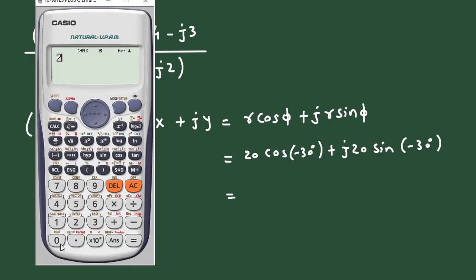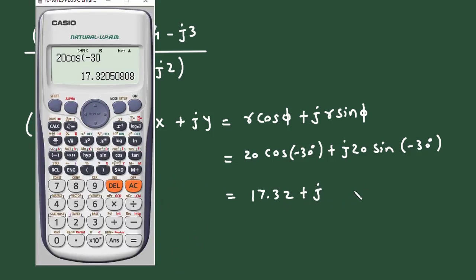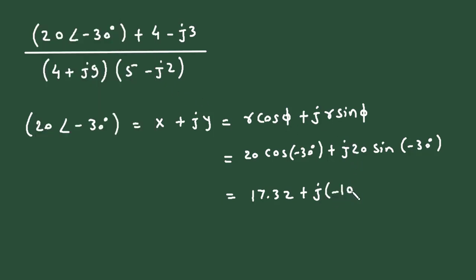Solving this in the calculator: 20·cos(−30°) = 17.32, and 20·sin(−30°) = −10. So the rectangular form is 17.32 − j10. We can now replace the polar form with this rectangular equivalent.